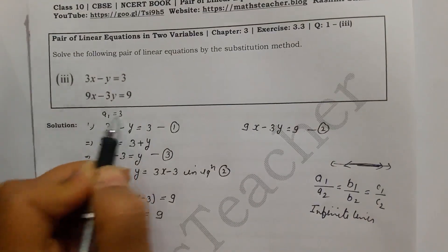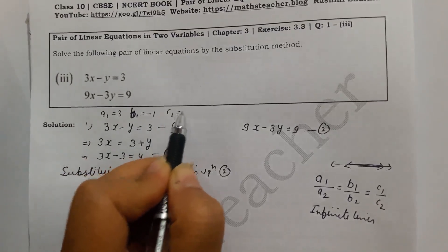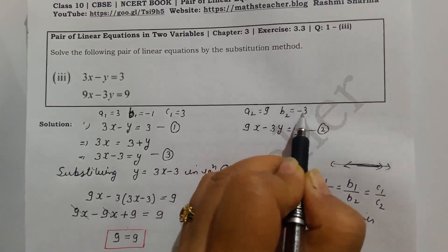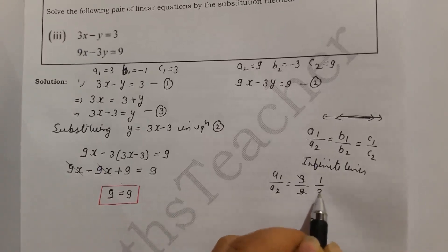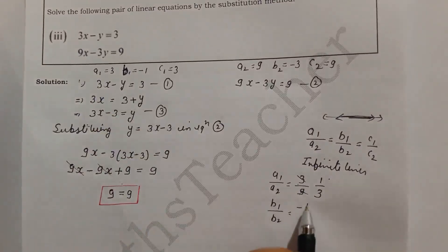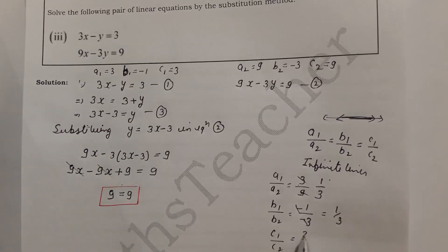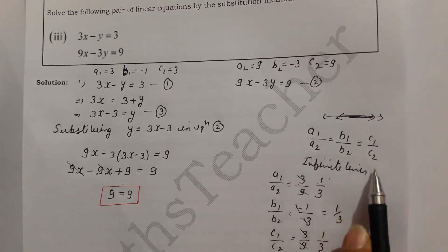Let us verify: from Equation 1, a1 equals 3, b1 equals minus 1, c1 equals 3. From Equation 2, a2 equals 9, b2 equals minus 3, c2 equals 9. So a1/a2 equals 3/9 equals 1/3. b1/b2 equals minus 1 over minus 3 equals 1/3. c1/c2 equals 3/9 equals 1/3. Therefore a1/a2 equals b1/b2 equals c1/c2, confirming infinite solutions.